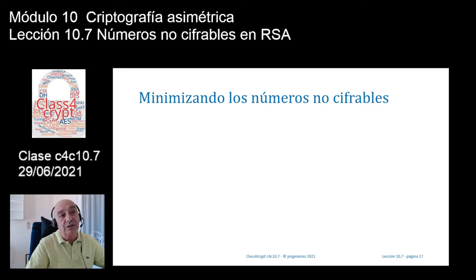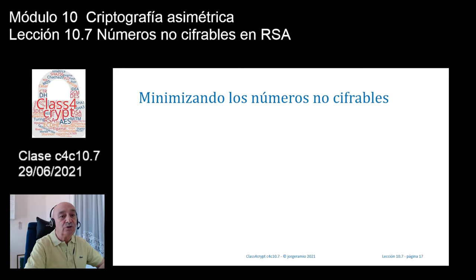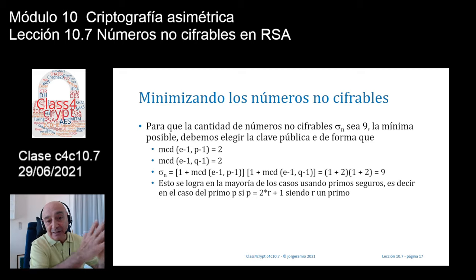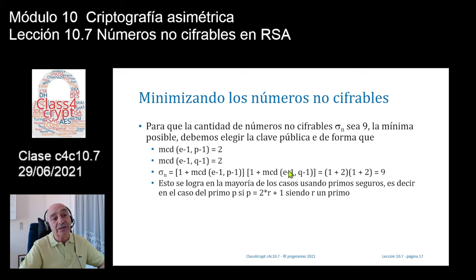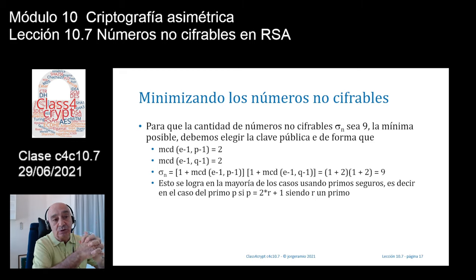Para que la cantidad de números no cifrables sea 9, la mínima posible, deberemos elegir la clave pública de forma que se cumpla: mcd(e-1, p-1) = 2 y mcd(e-1, q-1) = 2. Reemplazando en la ecuación σ(n): (1+2) × (1+2) = 3 × 3 = 9, que sería el número mínimo de números no cifrables.